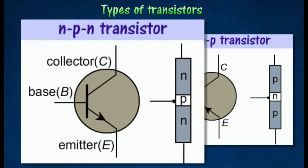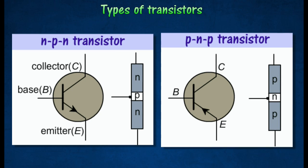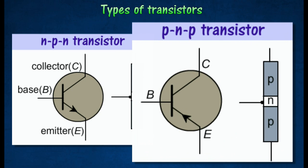The NPN transistor has a thin layer of P-type silicon sandwiched between two layers of N-type silicon. The PNP transistor has a thin layer of N-type silicon sandwiched between two layers of P-type silicon.